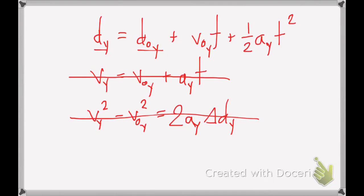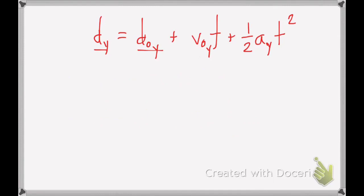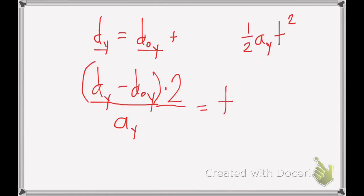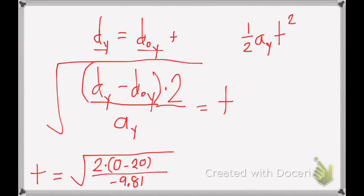I know my final position is 0. My starting position was 20. My initial velocity in the y direction was 0. And I know my acceleration in the y direction. So now all I'm left to do is solve for t. So let me grab that equation only and start to solve for t. Since in this example my initial velocity in the y direction is 0, I can just take that term out. So I've got dy minus d0y all over the acceleration in the y direction and the whole thing multiplied by 2 to solve for t squared. If I want to solve for t, I'll take a square root of that.